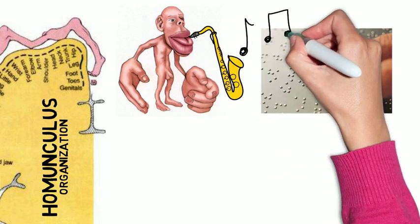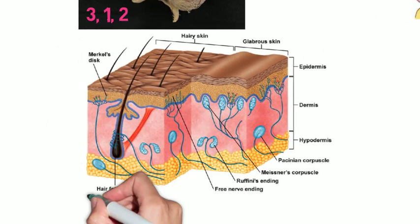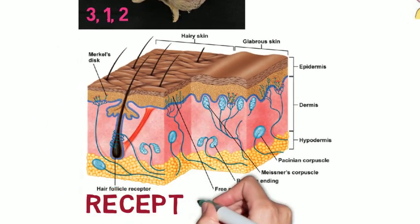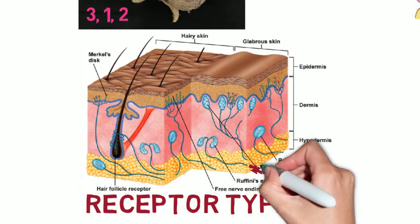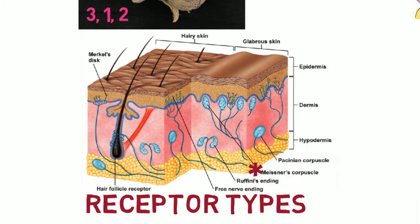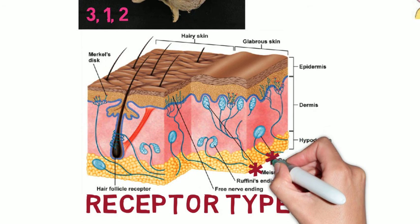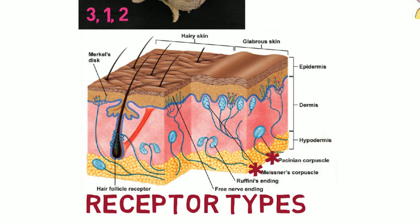There are five main peripheral receptor types which collect different types of sensory information. Meissner's corpuscles are sensitive to light touch, are rapidly adaptive, and are concentrated in areas sensitive to light touch such as the fingers and lips. Pacinian corpuscles are sensitive to vibration and pressure, are rapidly adaptive, and have a large receptive field with an especially sensitive center.